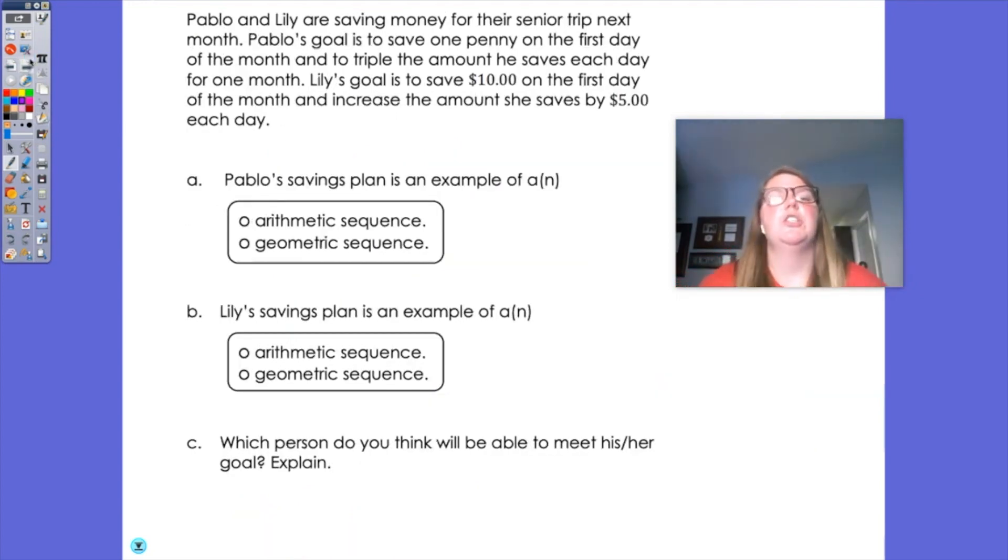So let's look at a different situation. So Pablo and Lily are saving money for their senior trip next month. Pablo's goal is to save one penny on the first day of the month and to triple the amount he saves each day for one month. Lily's goal is to save $10 on the first day of the month and increase the amount she saves by $5 each day. So Pablo's savings plan is geometric because he is tripling his amount, multiplying by three. Lily's plan is going to be arithmetic because she's increasing by a consistent amount each time. Which person do you think would be able to meet her goal? I would definitely say Lily.